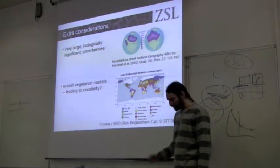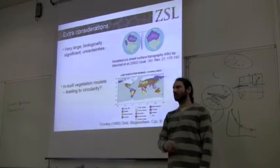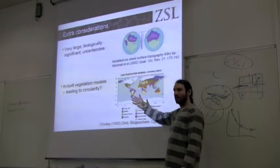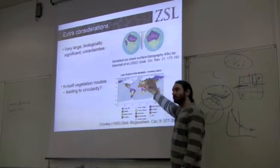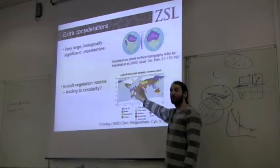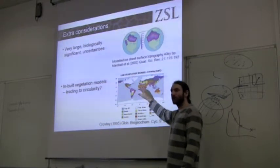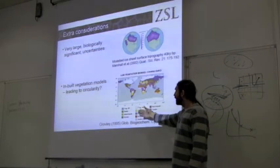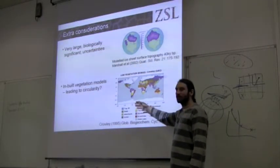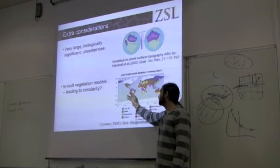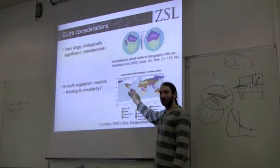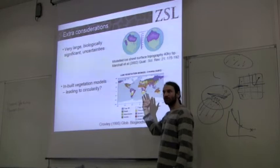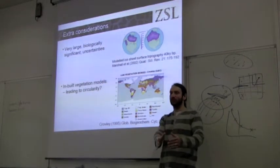Another concern is circularity: underlying these paleoclimate reconstructions there's a vegetation model — a biome-scale model — used to help reconstruct precipitation patterns. If we're then trying to model a tropical forest species, we're very likely to just recover the areas where the biome reconstruction says there's tropical rainforest. We need to think about how these biome reconstructions might shoehorn our projections into a particular area.